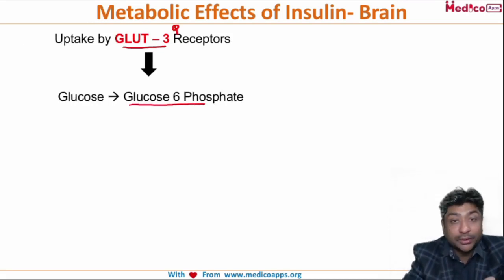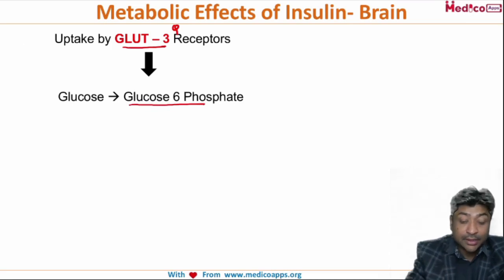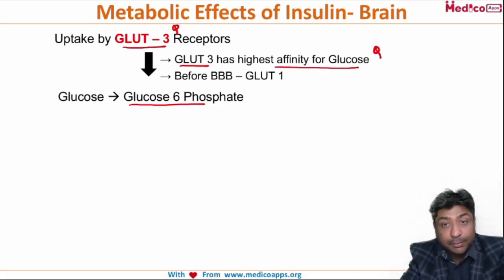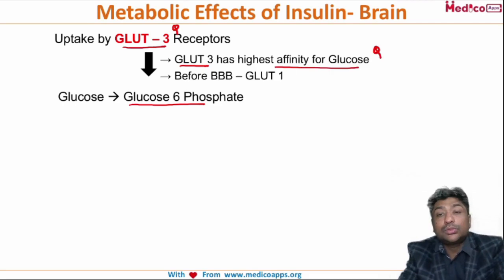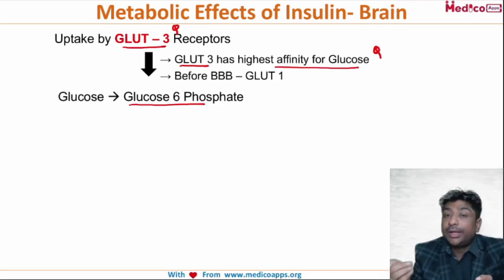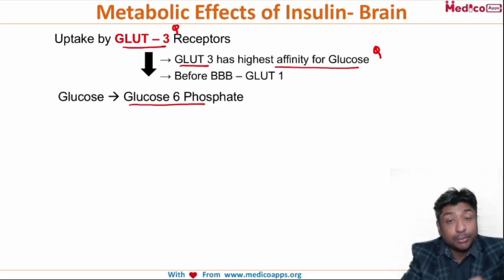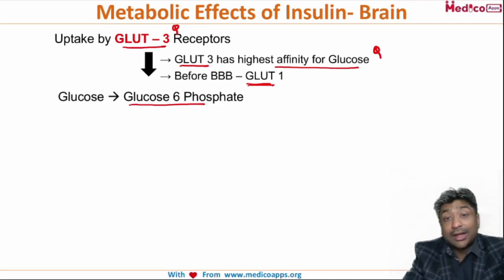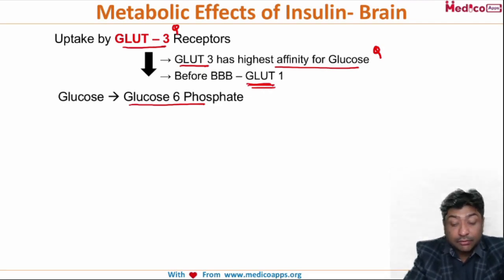There are two important MCQ points here. Remember, out of all the GLUT receptors, GLUT3 has the highest affinity for glucose. This is very important because even when blood glucose levels fall very low, GLUT3 receptors can still help the brain take up glucose. Also remember, brain not only has GLUT3 receptors but also GLUT1 receptors. Before the blood-brain barrier is developed, GLUT1 receptors are much more predominant compared to GLUT3.